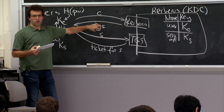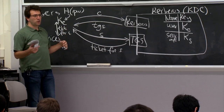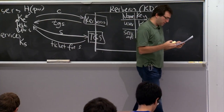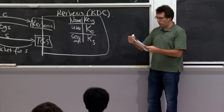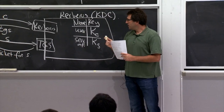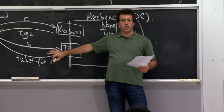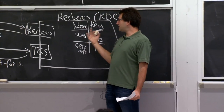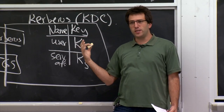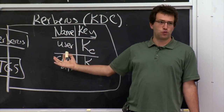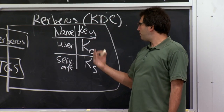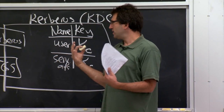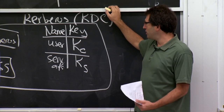Before diving into protocol mechanics, let's discuss naming in Kerberos. At some level, Kerberos is a name registry — responsible for mapping cryptographic keys to string names. This is a fundamentally important function in almost any distributed system for security, and we'll see something similar on the web in the next lecture, implemented differently.